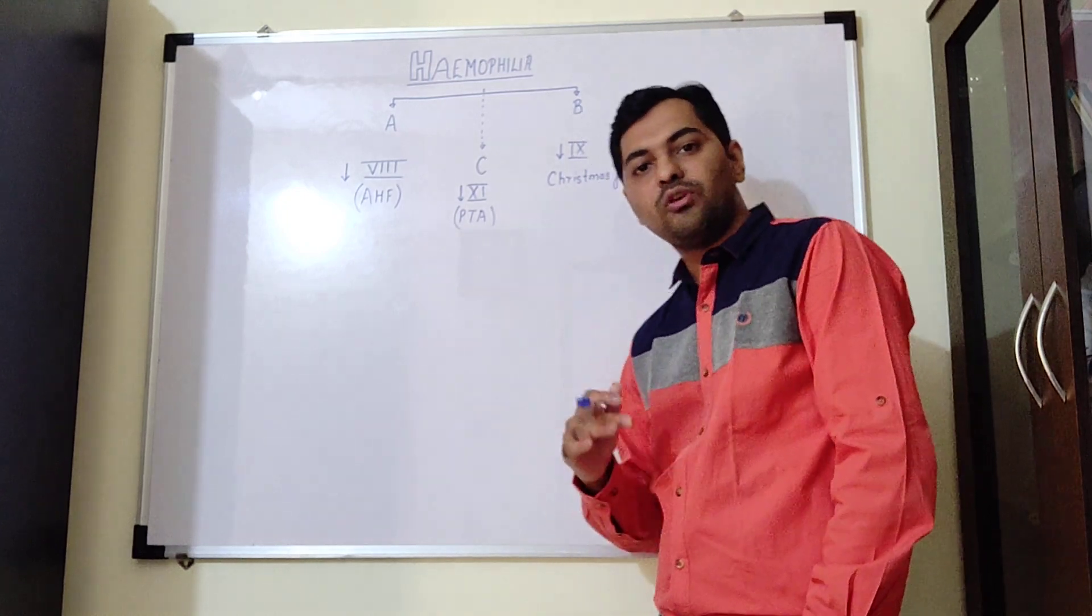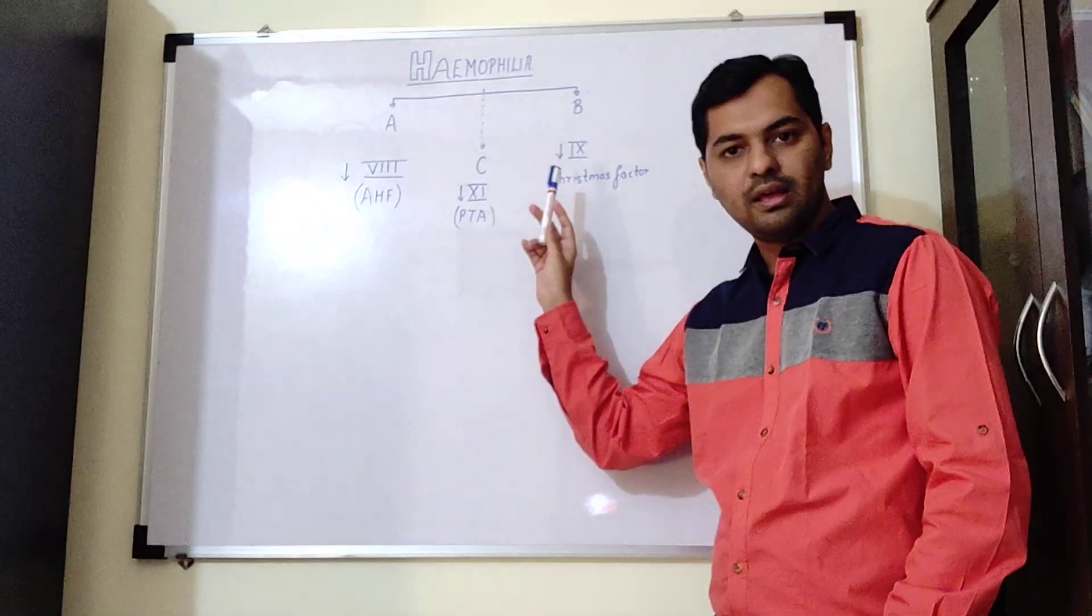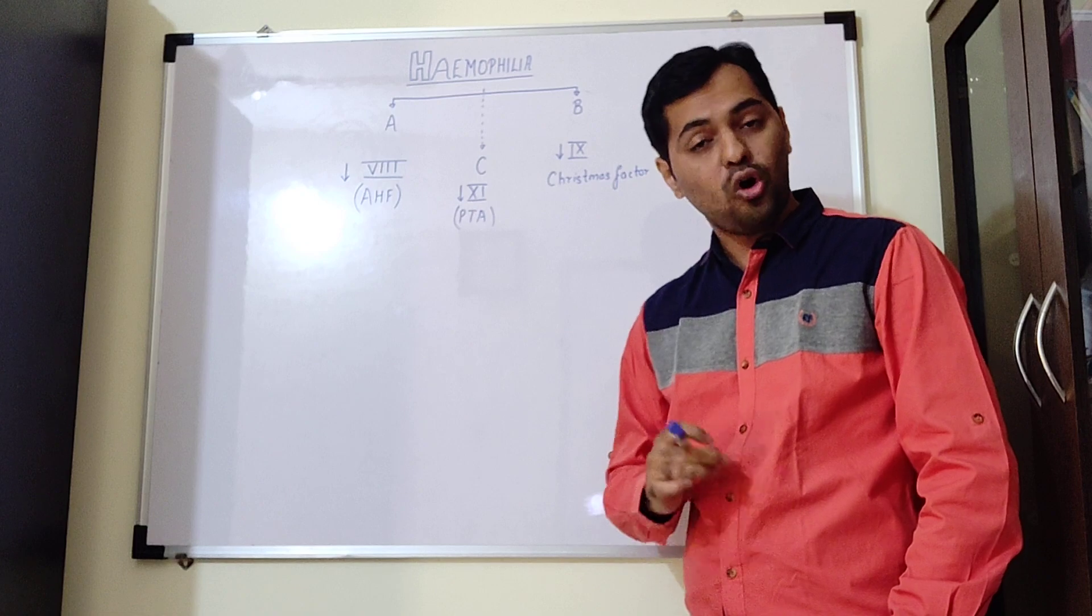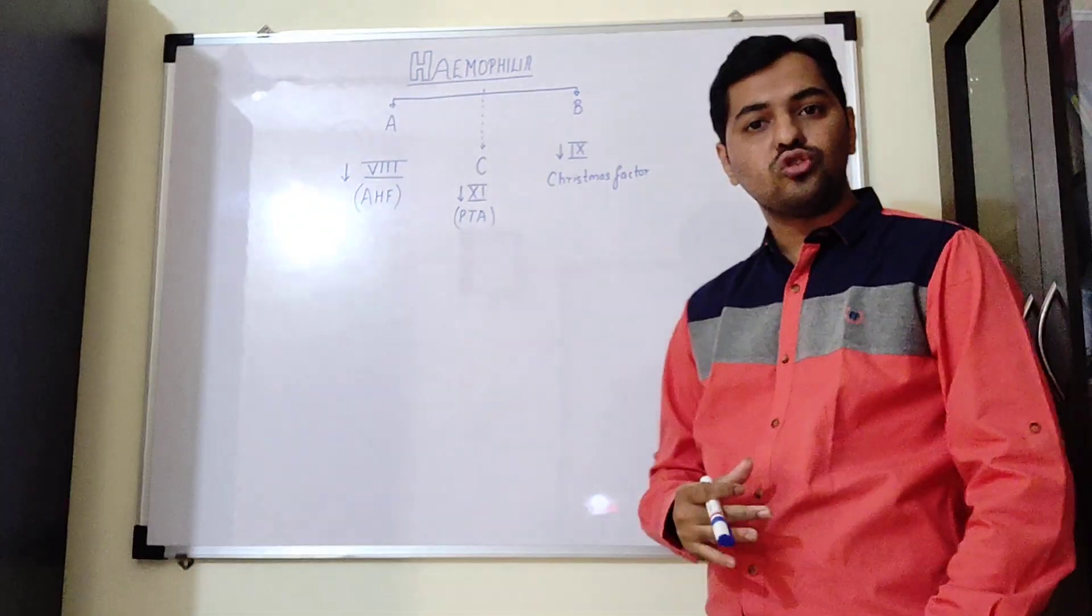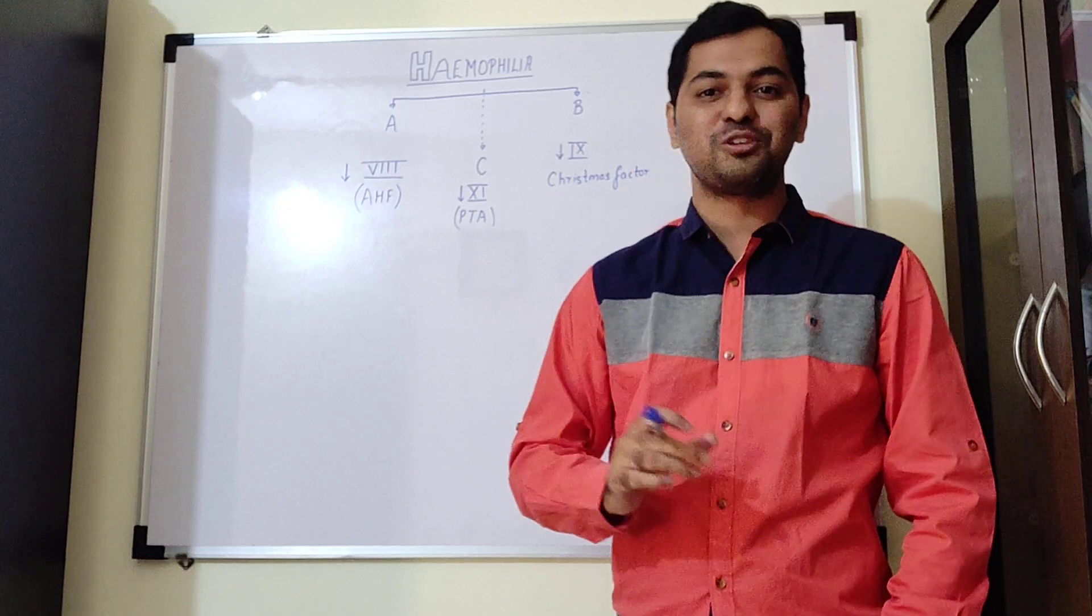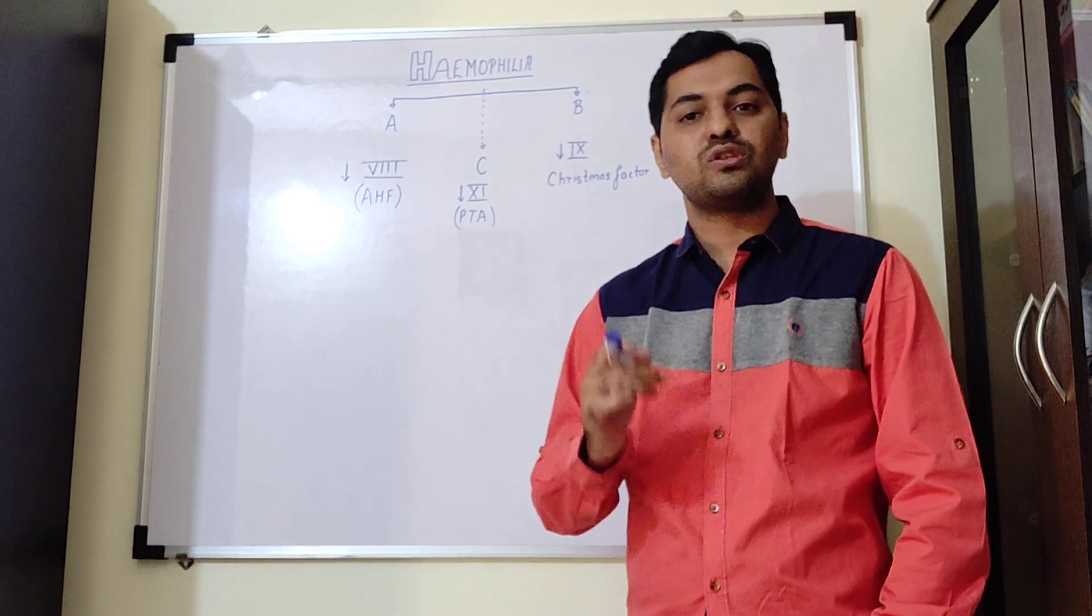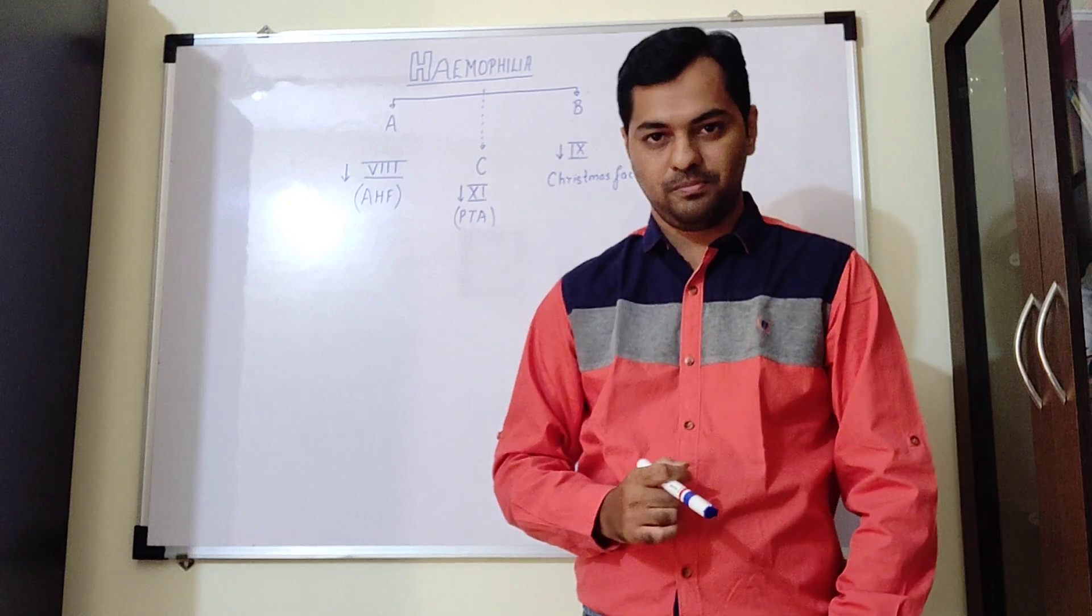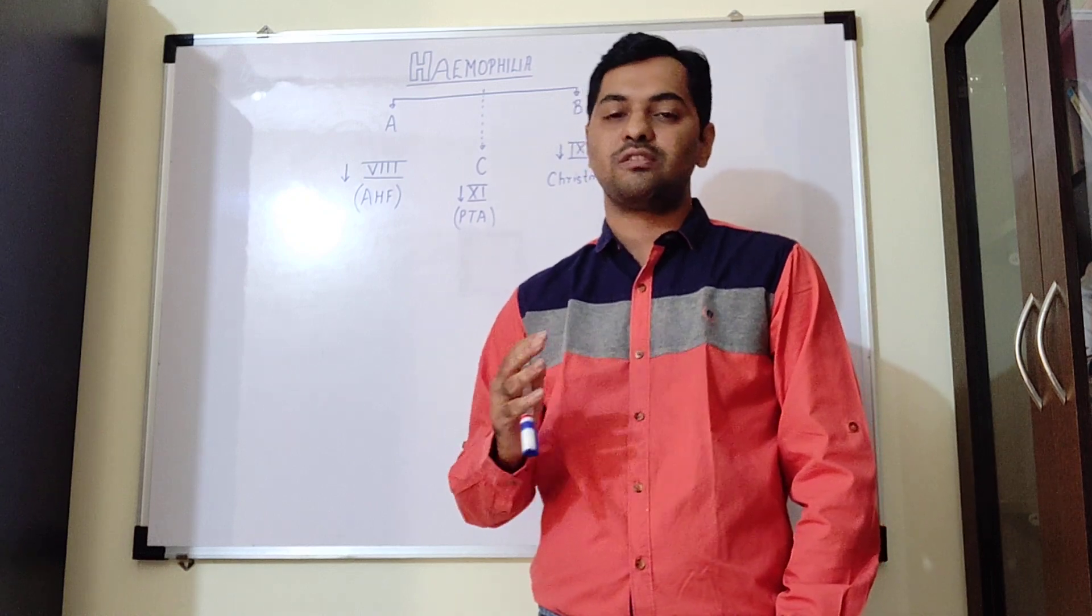The other type of hemophilia is hemophilia B, wherein there is deficiency of clotting factor 9, which is also known as plasma thromboplastin component or Christmas factor. Hence, hemophilia B is also known as Christmas disease. It is nowhere related to the festival of Christmas. In fact, hemophilia B was first discovered in a patient named Stephen Christmas, and due to this, the disease was named after the patient and is called Christmas disease.